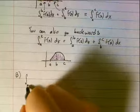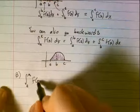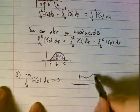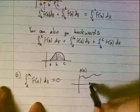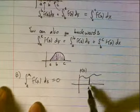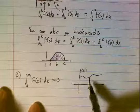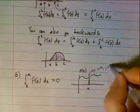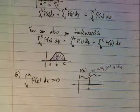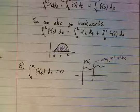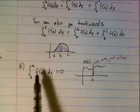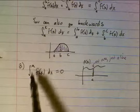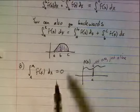The next rule: the integral from a to a of f(x) dx equals zero. No matter what curve shape we have, if we don't go anywhere, there's no area. This one shows up in problems that look intimidating but really aren't — no matter how complex the integrand looks, if the bounds are the same, the answer is zero.